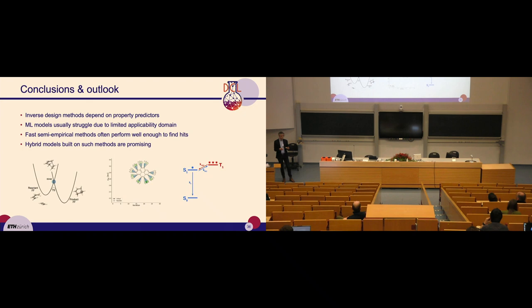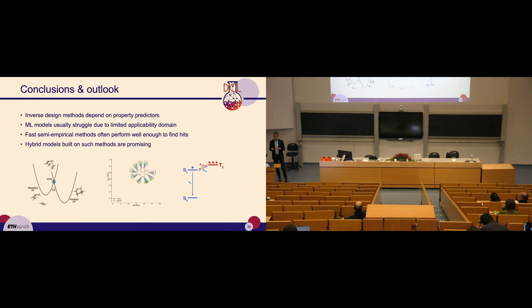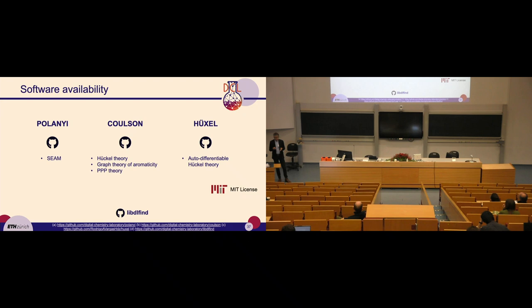I hope I've convinced you that for inverse design methods, one of the most important parts is the property predictor. Machine learning models are maybe not the best approach if there are other alternatives, and right now we can use fast semi-empirical methods when they are available for our properties. Going forward, we're going to see much more of these hybrid methods, and semi-empirical methods are actually a very good starting point for building them. All software for the calculations in this presentation is publicly available on GitHub with permissive licenses, mostly MIT. Thank you for your attention and I would be very happy to answer any questions.